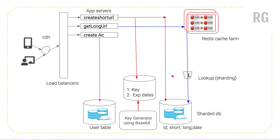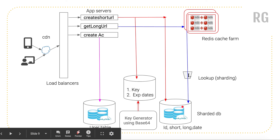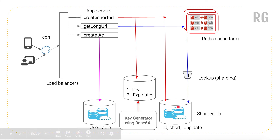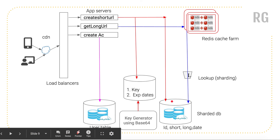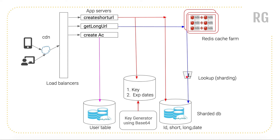There is also a lookup component, which is used to figure out which database your data is stored in when you are sharding the database. If you have millions of records and the database needs to be sharded, you can shard based on the expiration date. The lookup can figure out, based on the long URL or the expiration date, which database the key-value mapping is stored in, and then it goes directly to that table to retrieve the information and return the long URL.